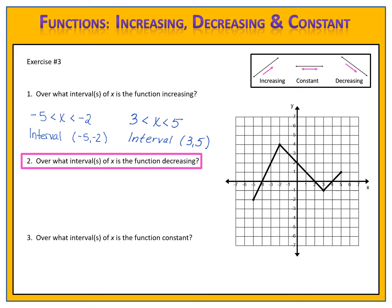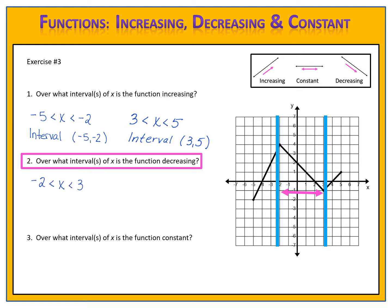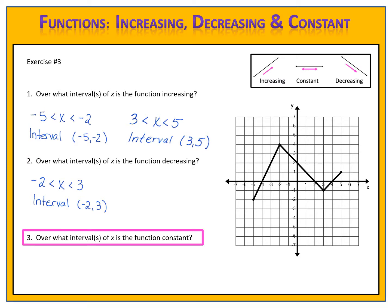Question 2: over what intervals of x is the function decreasing? We look at the graph and identify one decreasing region. The boundaries are from negative 2 to positive 3, written as a single compound inequality or using interval notation (−2, 3). Question 3: over what intervals of x is the function constant? We look at the graph and there are no regions where the function is constant, so the answer is simply none.